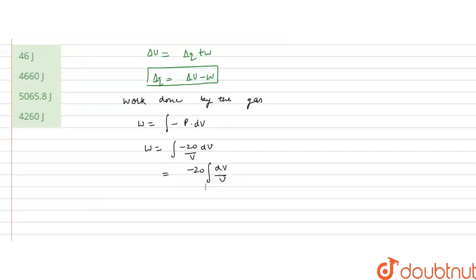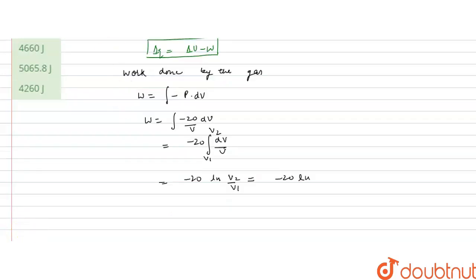And this is from 1 litre to 10 litres, so this will be minus 20 ln V. So, this value V is 10 and V is 1, so it will be minus 20 ln 10, that is equal to ln, to convert into log, so we will multiply this by 2.303.